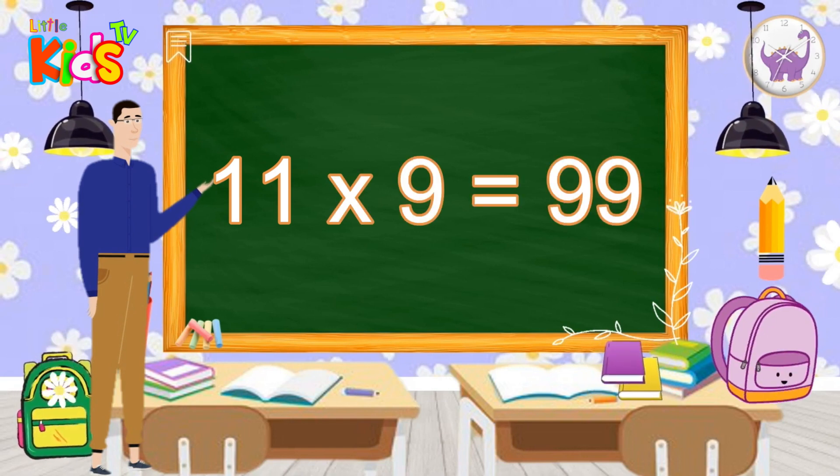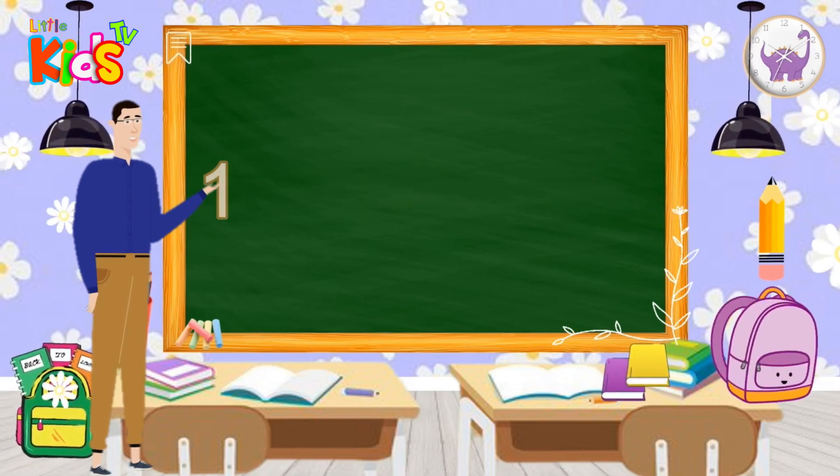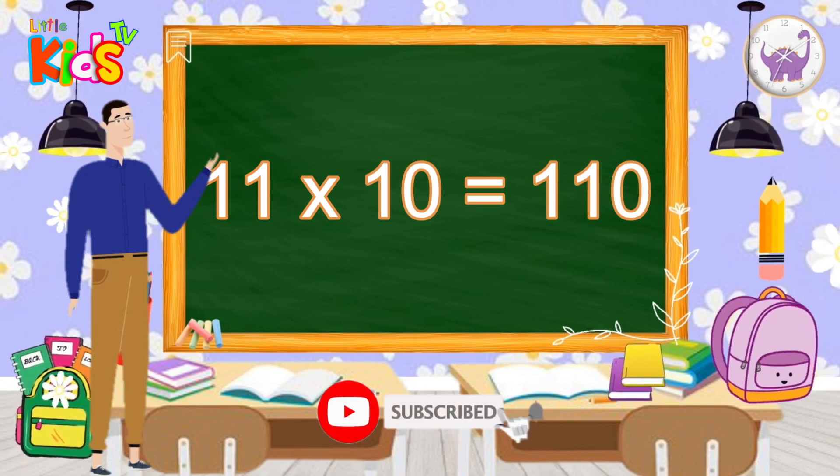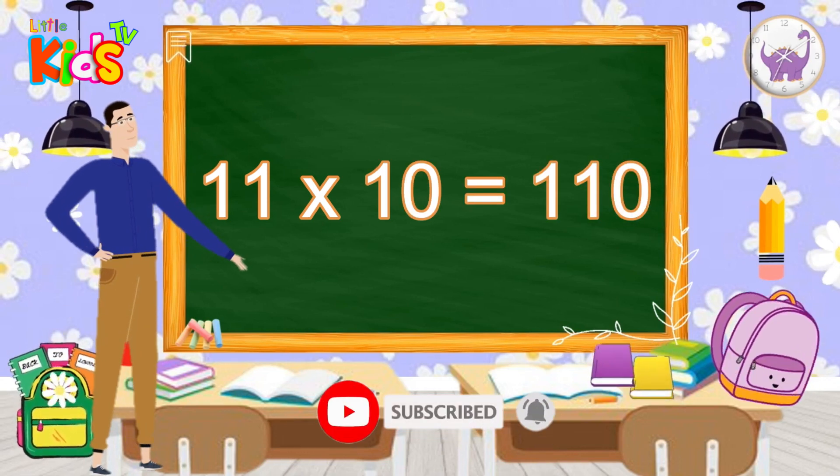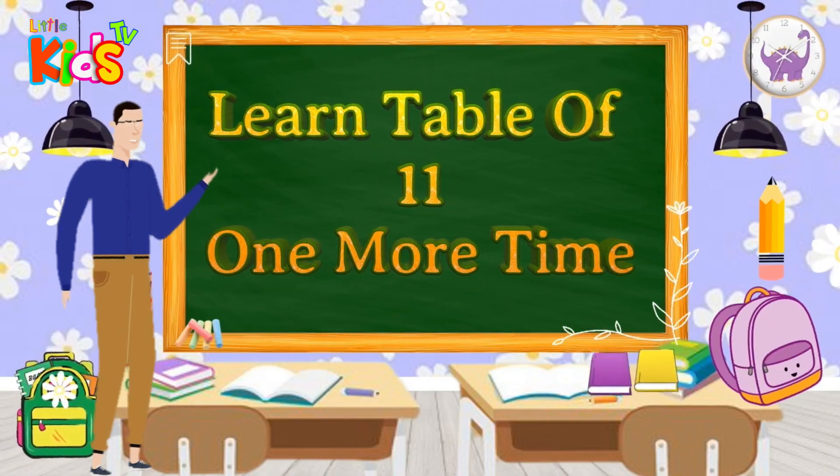11 9s are 99. 11 10s are 110. Let's learn the table of 11 one more time.